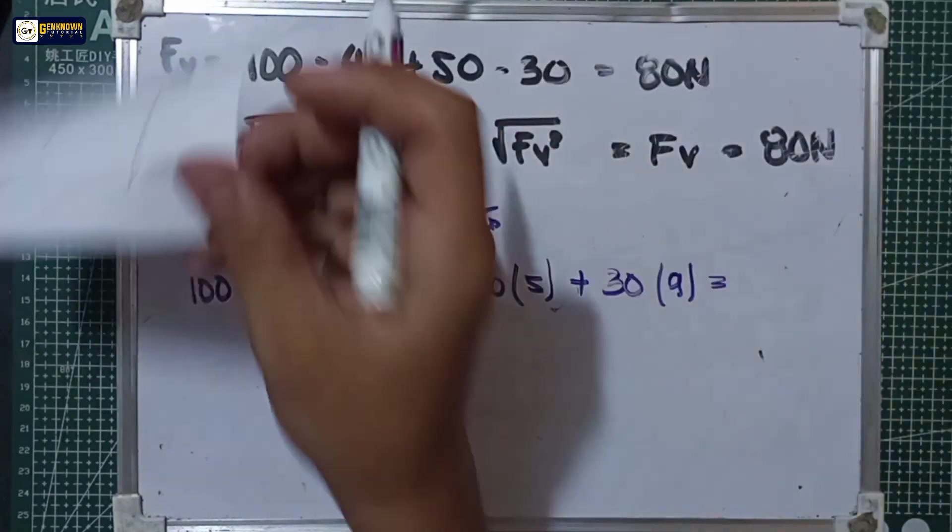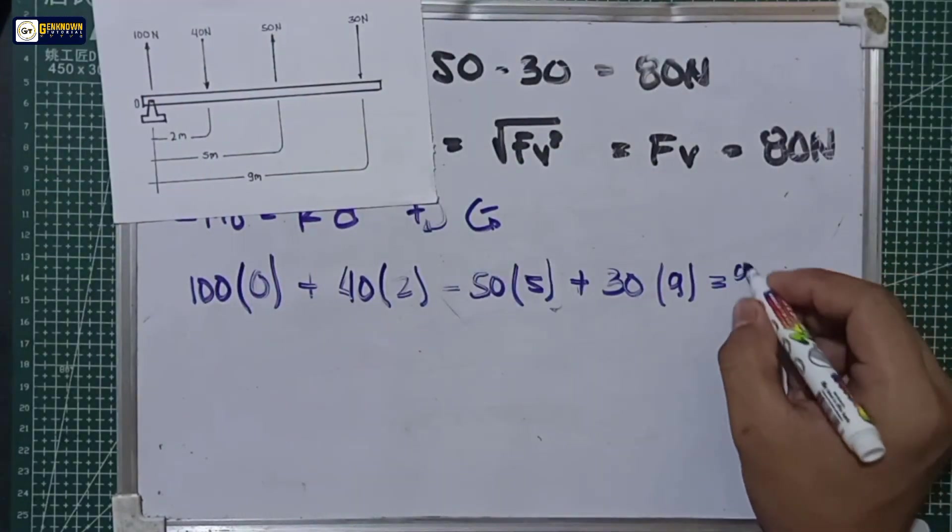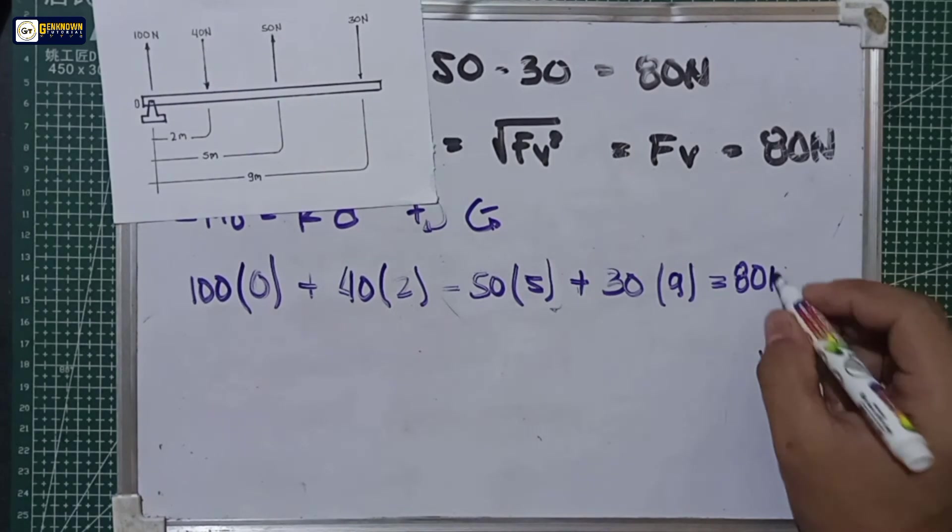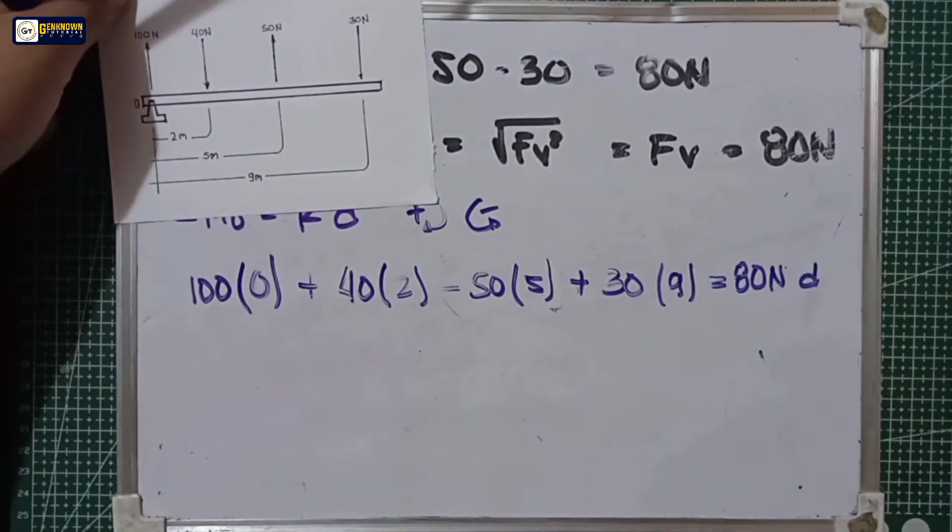So 40 multiply by 2 is 80, minus 50 times 5, plus 30 multiplied by 9.